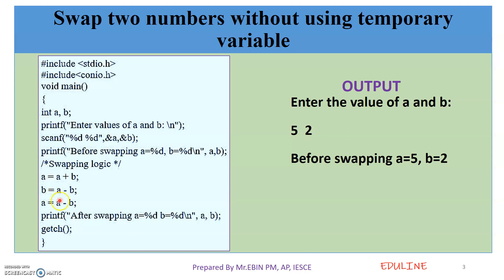Next statement: B is equal to A minus B. That means 7 minus 2, so B becomes 5. Now B is equal to 5.